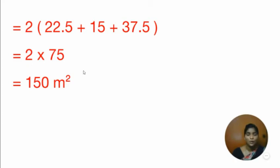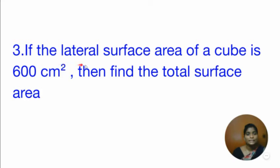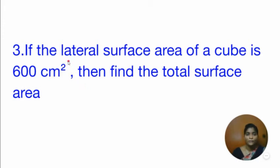I hope all of you are clear with the cuboid sum. For lateral surface area of a cuboid, use the formula 2 into (L plus B) into H square units. Shall we move on to the cube sum? To find TSA of a cube, first use the lateral surface area formula to find the A square value, then substitute in the TSA formula.